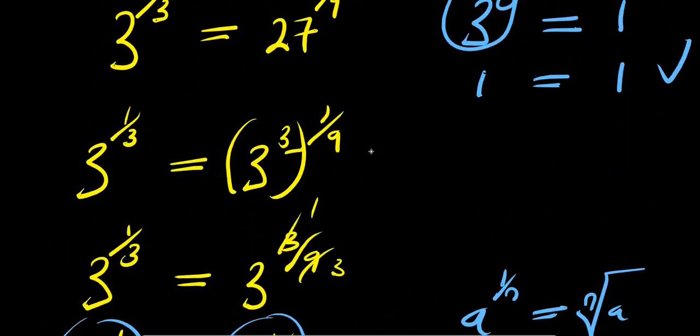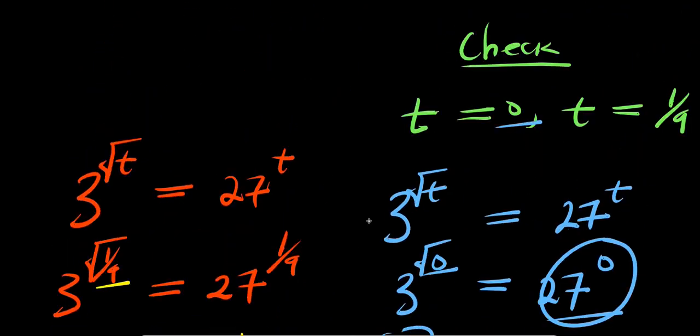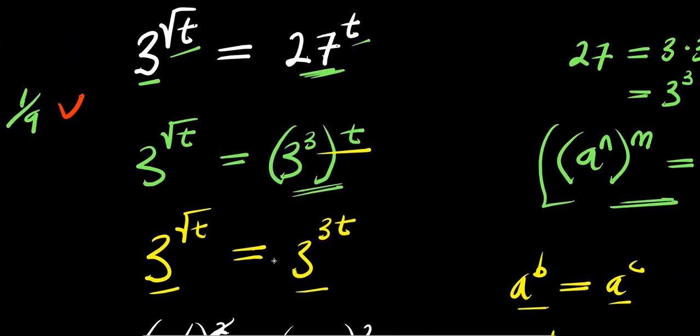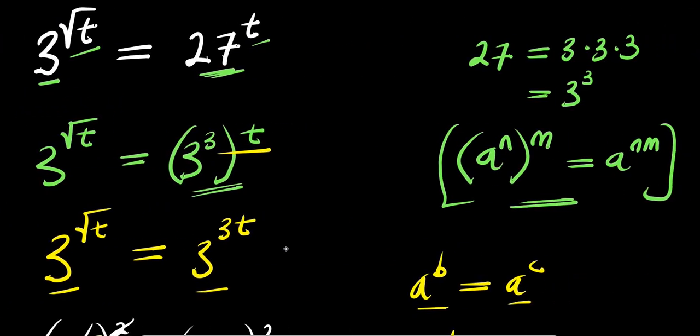So ladies and gentlemen, that is it and that is how you can solve this problem. Those are the two solutions: t equals 0 and t equals 1 over 9. Thank you and see you again!